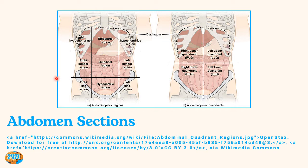The abdominopelvic regions are a little more complicated and easy to forget once you learn them, so we'll go over tools to remember them specifically. In the center, that's where our belly button is — where our umbilical cord used to be — so that's why it's called the umbilical region. The epigastric region is above it, since 'epi' means above, and the hypogastric region is below it, since 'hypo' means below.